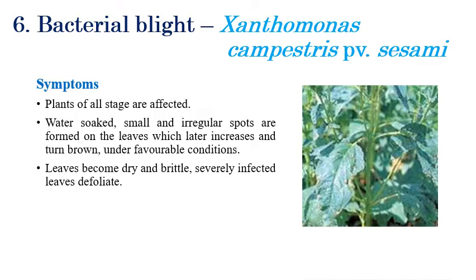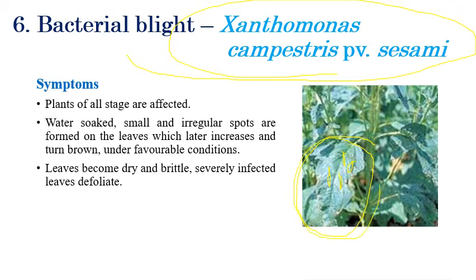The sixth disease is bacterial blight, caused by Xanthomonas campestris pv. sesami. On the right side, water-soaked lesions with irregular spots can be seen on the leaf surfaces. In advanced stages, the leaves become dry and brittle. In severe cases, defoliation occurs and leaves fall from the plant. This bacterial blight can infect sesame at all stages of crop growth.